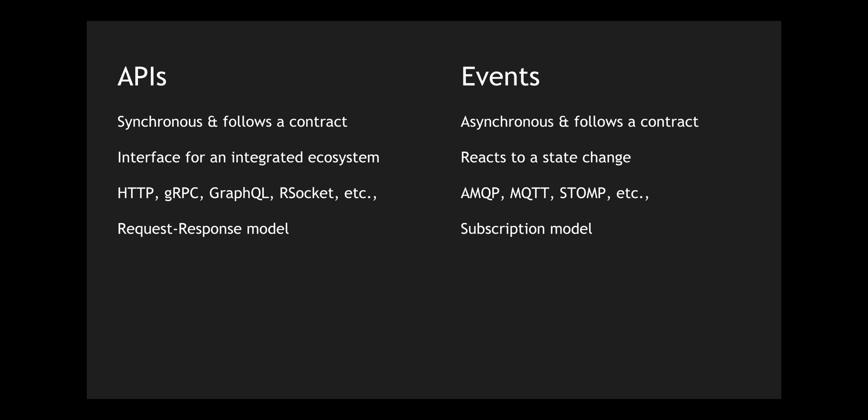APIs usually follow a request-response model, though web sockets and RSocket can do two-way communication with back pressure. Events are mostly subscription-based — you subscribe to a queue and consume messages through a messaging system. APIs use direct communication with no intermediary, so when a consuming application hits a producer's API it is served directly, though load balancers or API gateways may be abstracted in between. Events follow a broker or mediator pattern where an intermediary system holds the messages for a period of time until they are consumed.